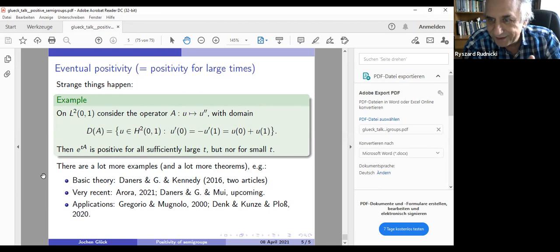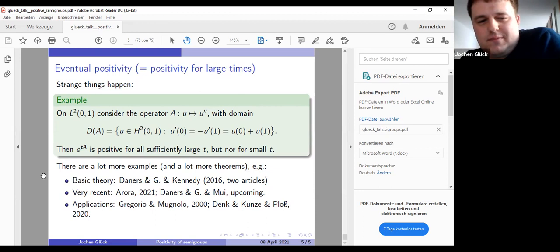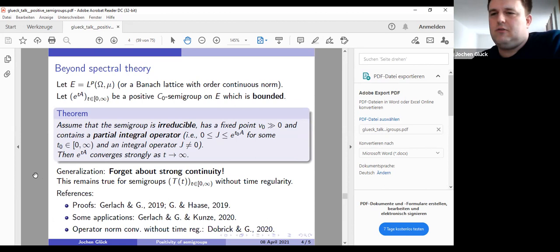Good question. So there is a recent preprint by Sahiba Arora, who's also here and myself, about such results. You can prove many results about long-term behavior of positive semi-groups, also for eventually positive semi-groups, sometimes by different methods. I am not sure whether this result holds for eventually positive semi-groups. I really don't know, but results based on spectral theory often also hold for eventually positive semi-groups.